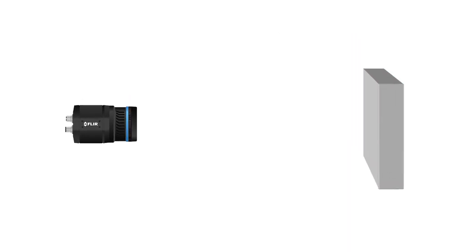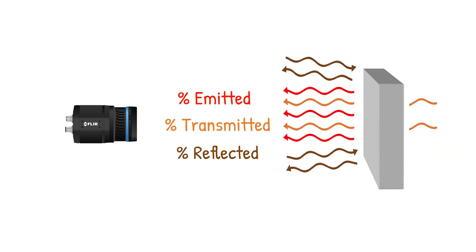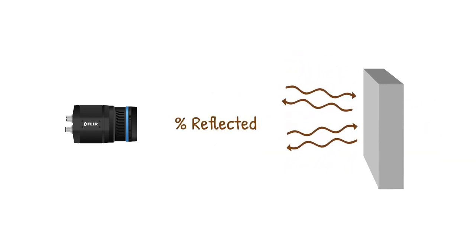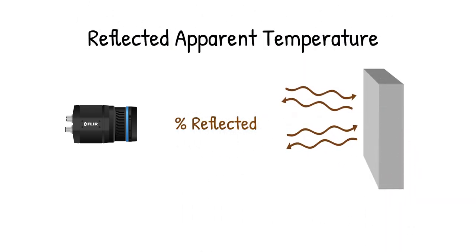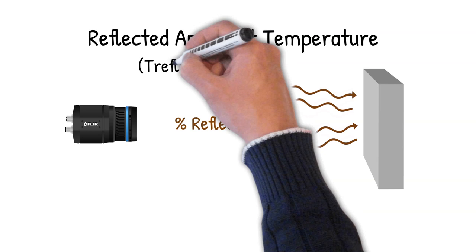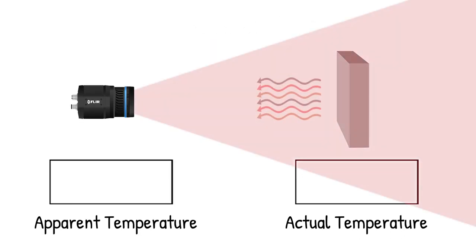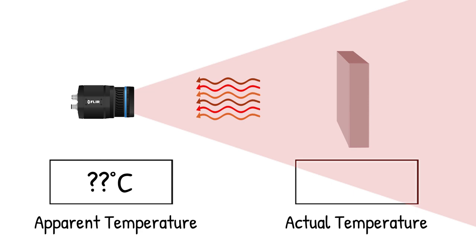As such, the total radiation reaching the infrared camera could be a combination of emitted, transmitted, and reflected radiation. The temperature associated with the reflected radiation is known as the reflected apparent temperature. It is also known as T-reflected or T-background. The infrared camera sees the total radiation from the target of interest and cannot differentiate between the various radiation sources.